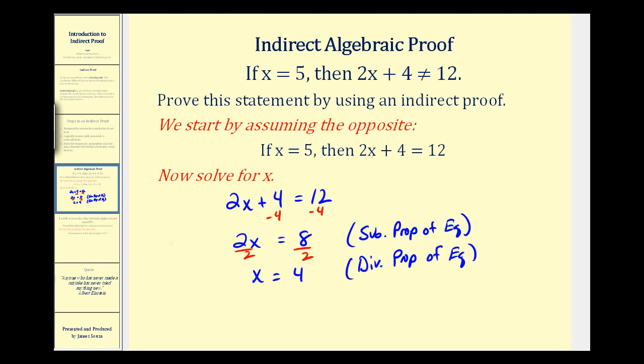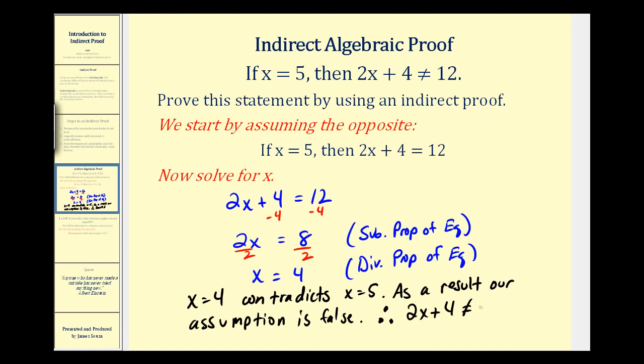Let's go ahead and write this out. So x equals four contradicts that x equals five. So as a result, our assumption is false. Therefore, 2x + 4 cannot equal twelve. And this is exactly what we were trying to prove from above. If x equals five, then 2x + 4 cannot equal twelve.